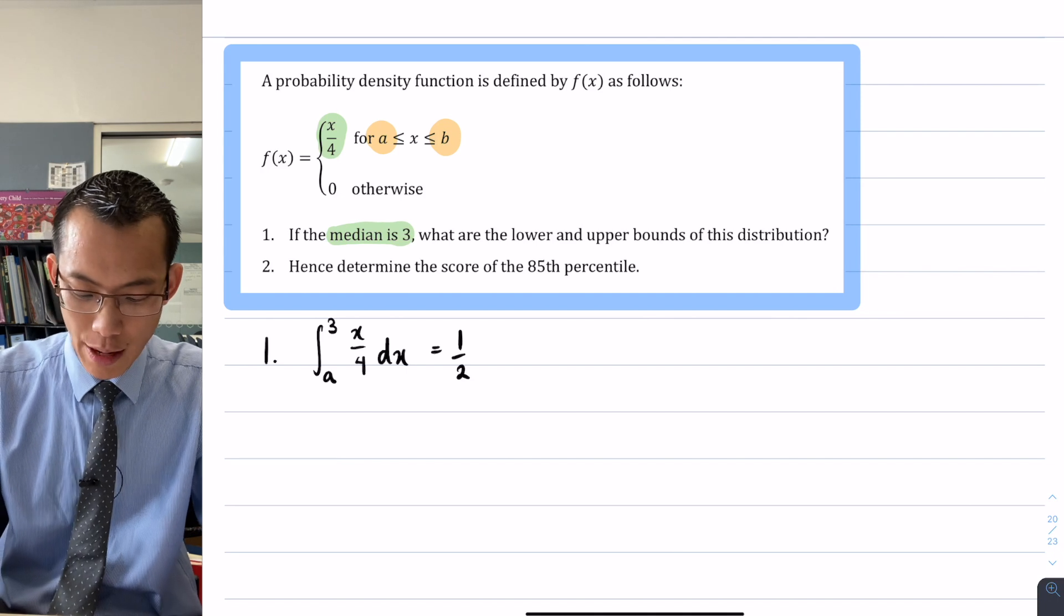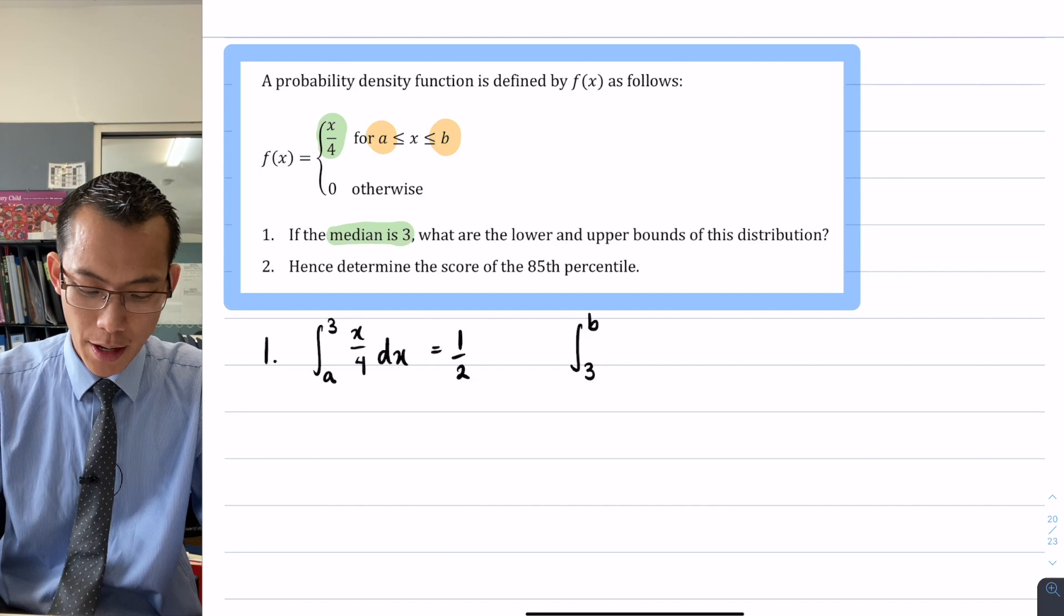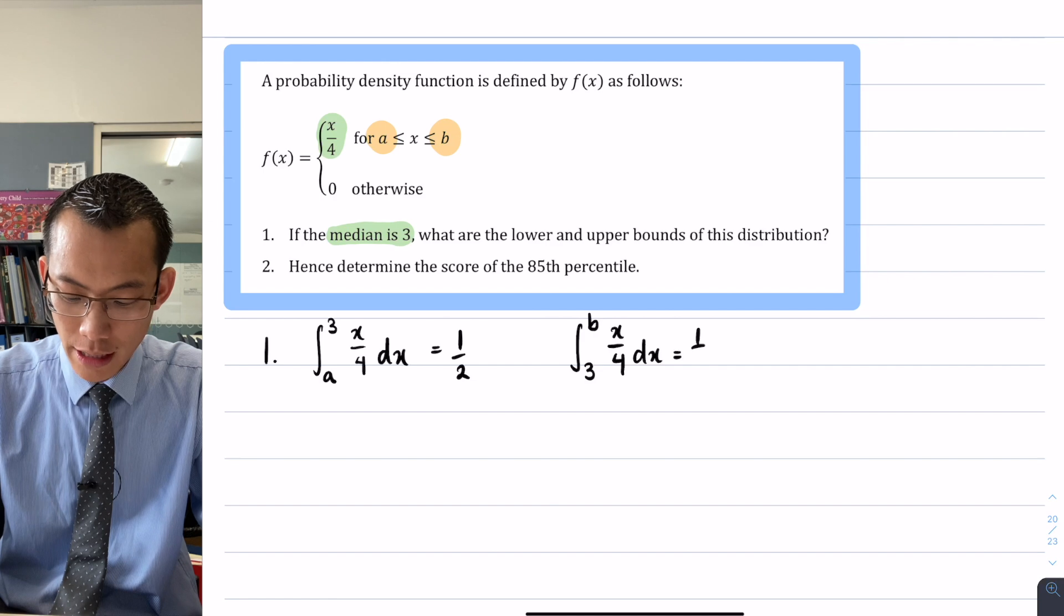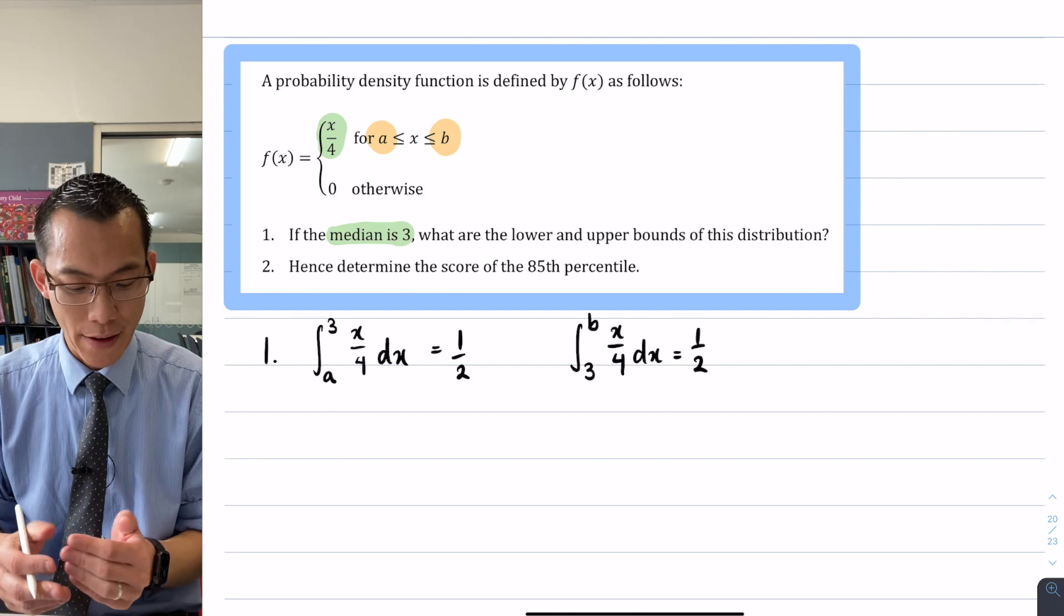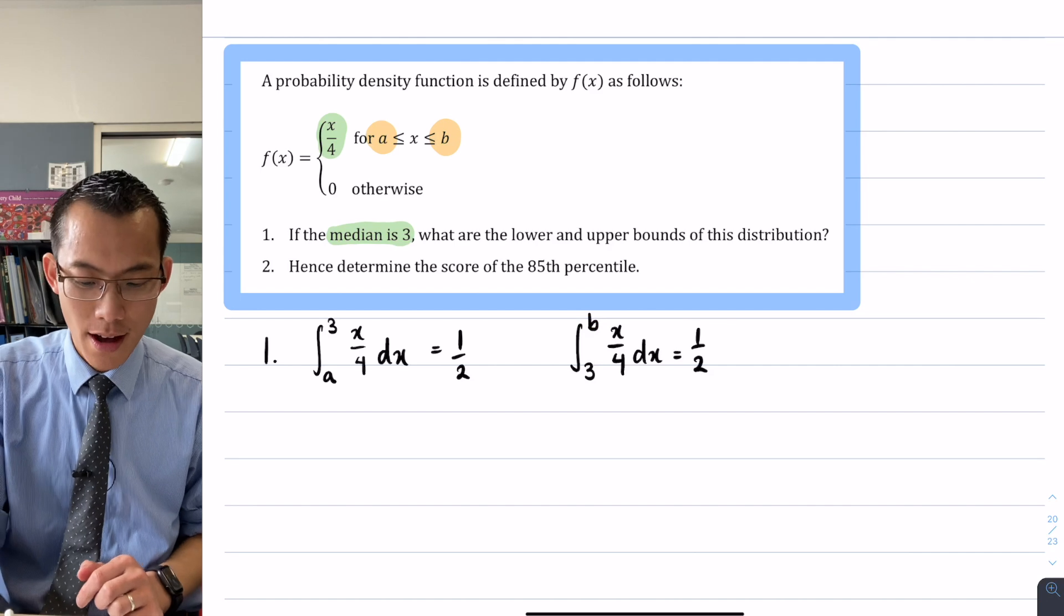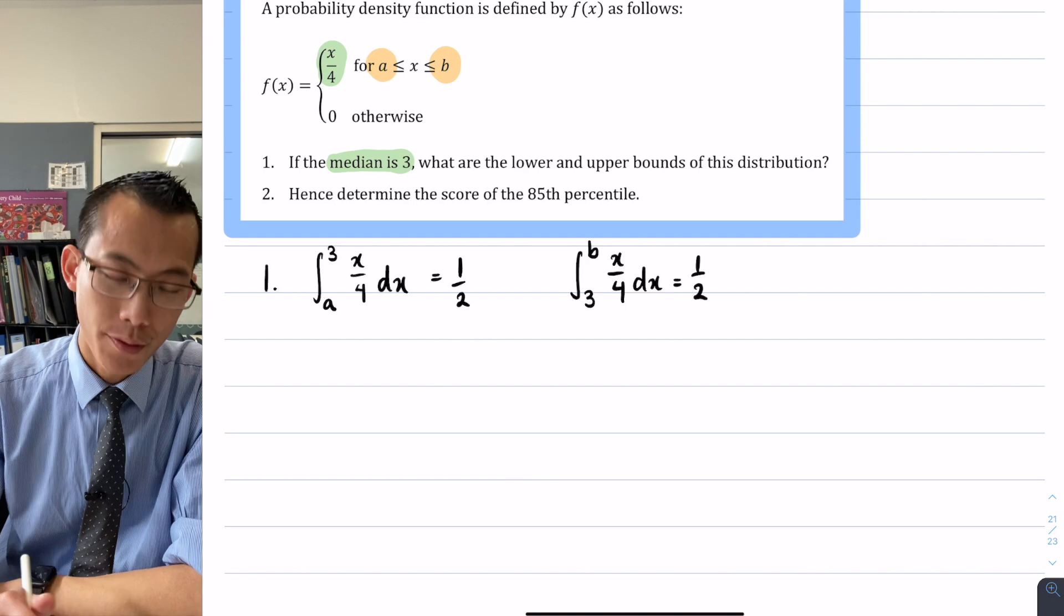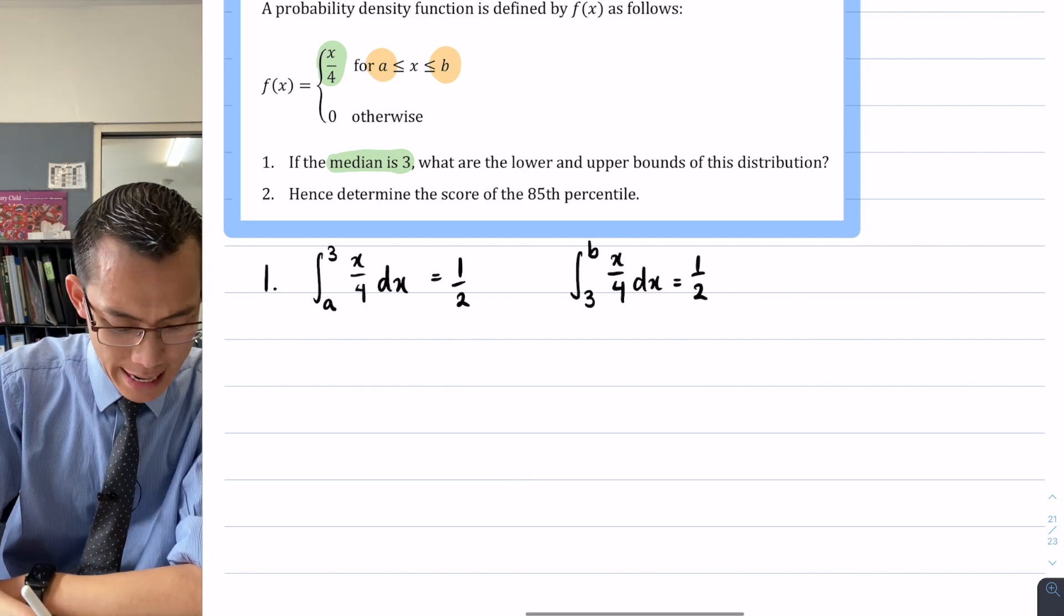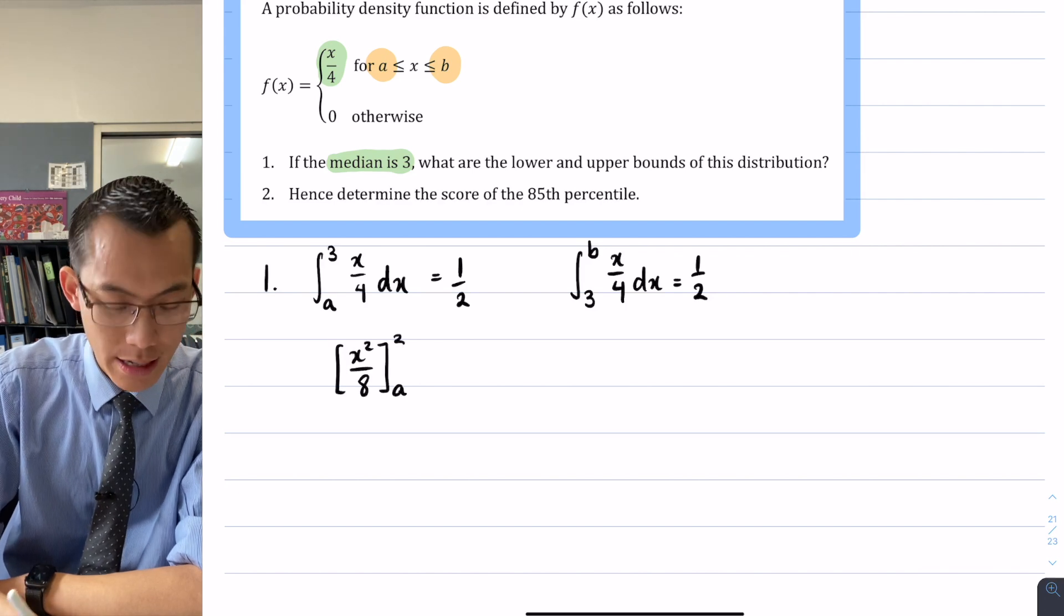And in exactly the same way, I can say from the median up to the upper boundary, if I take that same function and find the area that's relevant there, I should get a half as well. So using each of these two integrals, and the fact that the only unknown in each one is the lower boundary here and the upper boundary here, I can solve for this. Let's see how that plays out. This particular function, x on 4, when I integrate it, its primitive is x squared on 8, so I'll pop that in here, and then I need to evaluate it at its two boundaries.